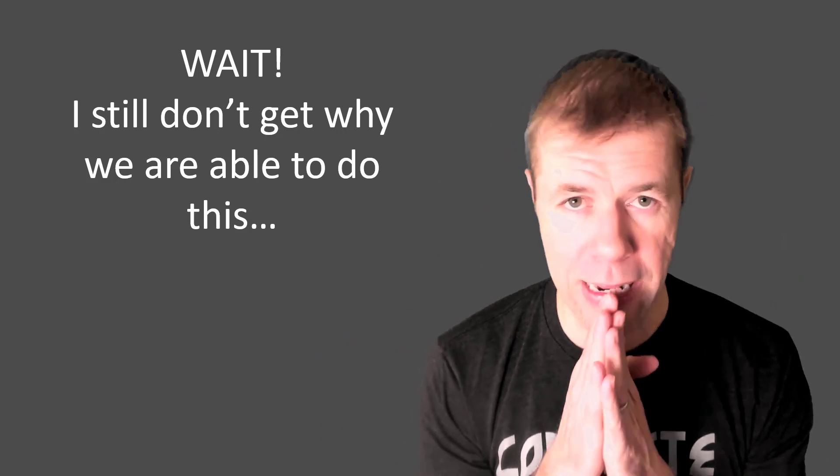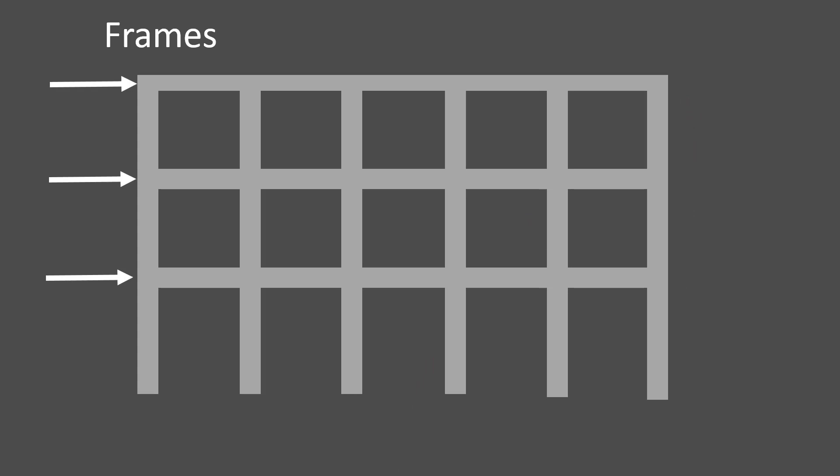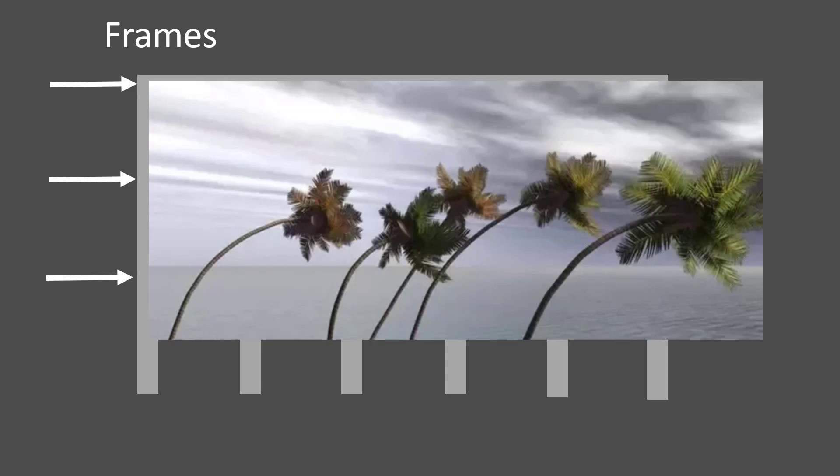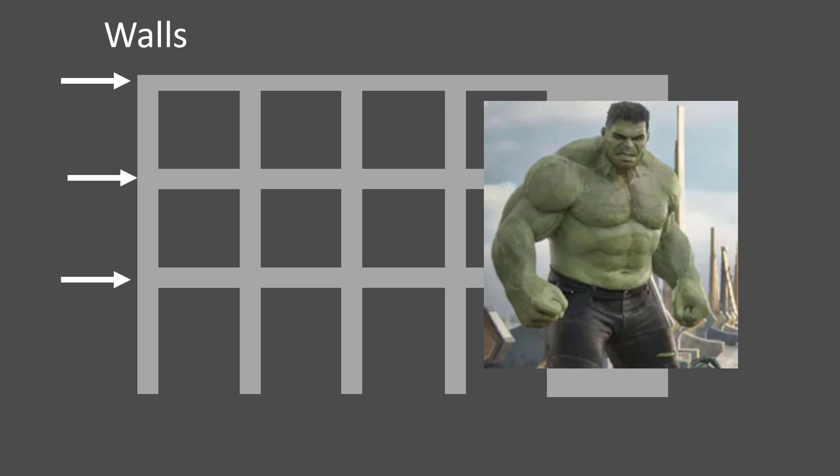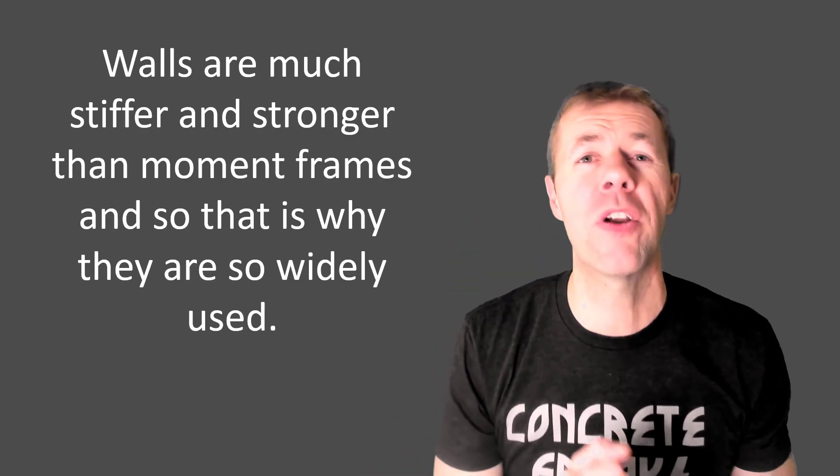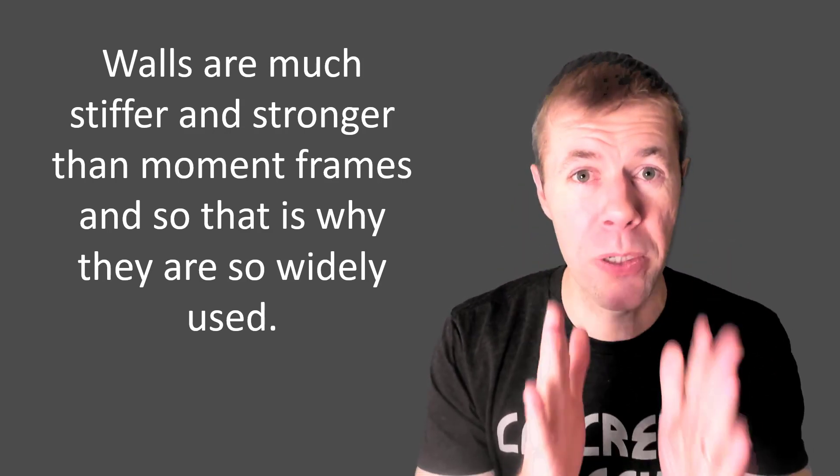But wait, you still might not get it. You still might not quite understand what's going on. So here's an analogy for you. A normal frame structure with columns and beams, when the wind starts to blow on it, it's going to bend like a bunch of trees, right? Every single column is not that stiff. And so they're all going to bend together to try to resist it. But if I have my friend the wall, and that wind starts blowing down, this is a different beast, ladies and gentlemen. This is the incredible Hulk. This is Hulk. We got Hulk on our side. And he's just going to stop all that load. It doesn't matter about the trees, the load's going to go right through the trees, all the way to the Hulk. So walls are much stiffer, much stronger than moment frames. And that's why they're so widely used. That's why people use them, because you can economically build buildings with walls.